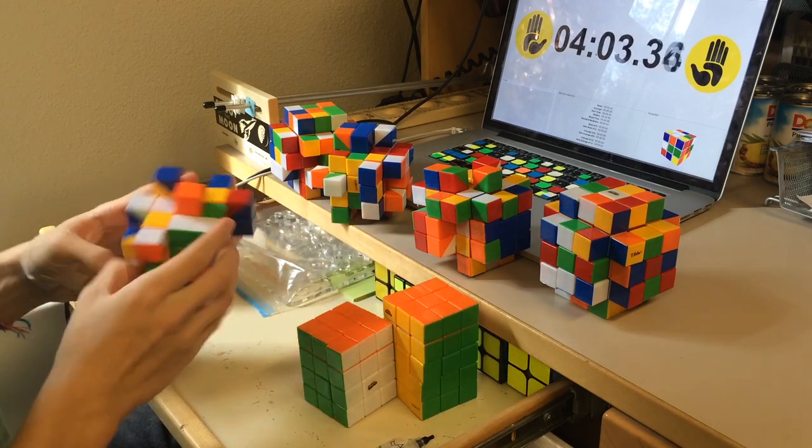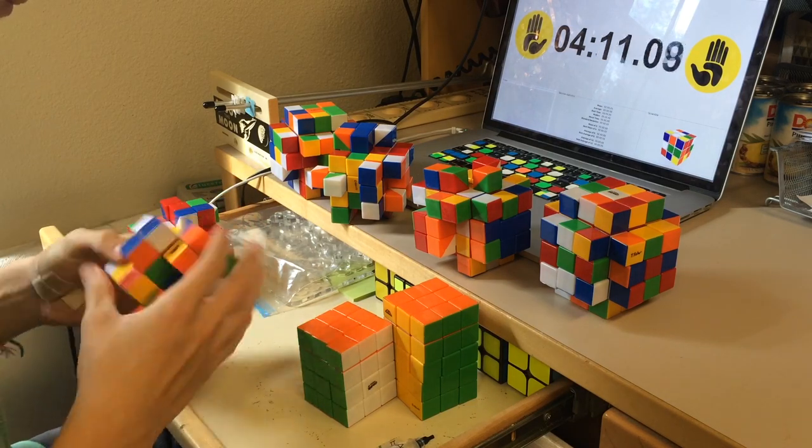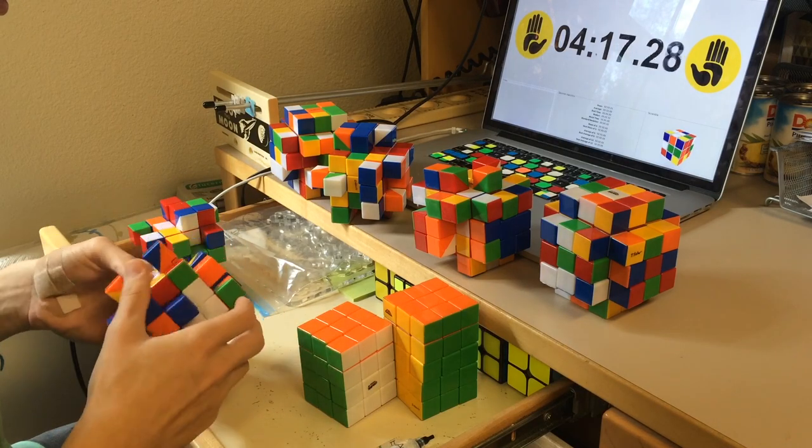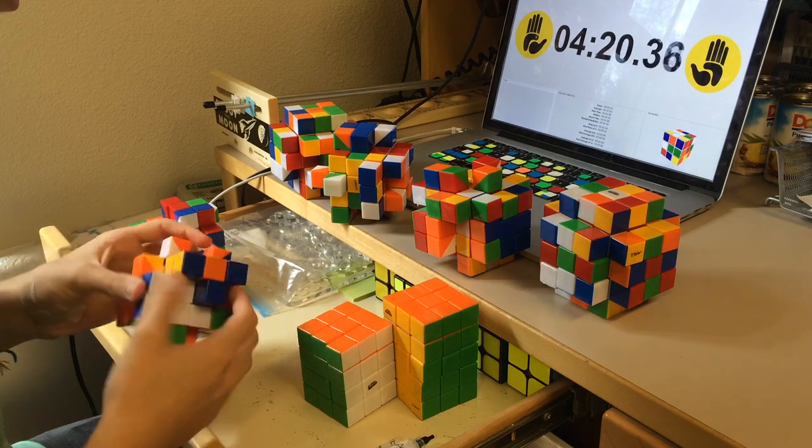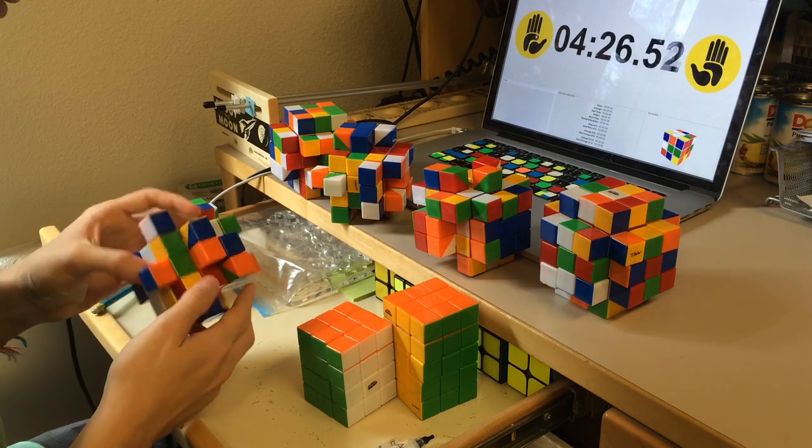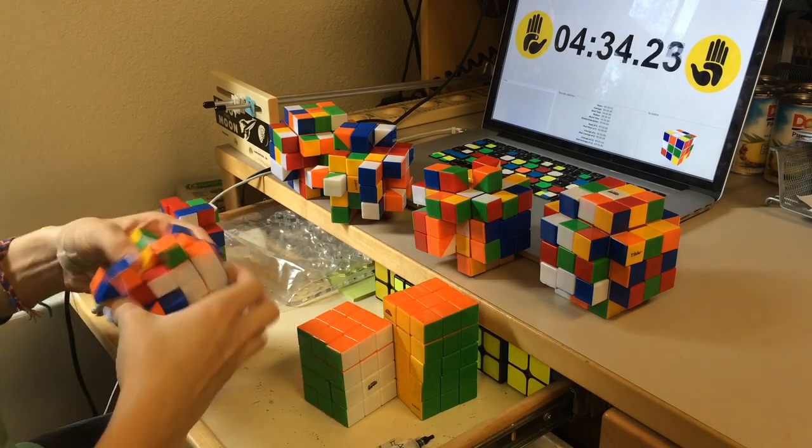F-G-H-J-O-R-T, what are your main cubes? I'll just go over them quickly. 2x2 is the Shi Shuang, 3x3 Gans 357mm, 4 Weisu, 5 Ao Chuang, 6 Ao Shi, 7 Ao Fu, Megaminx Xingxiao, Pyraminx Moyu, and that's all, and then OH is my Gans as well.